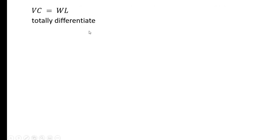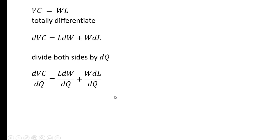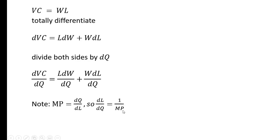We're going to start by totally differentiating this expression. The change in variable cost equals units of labor times the change in the wage, plus the wage times the change in labor. If we divide both sides by DQ we get the following expression. Note that the marginal product of labor is the derivative of the production function with respect to labor, so DL over DQ is going to be one over the marginal product.